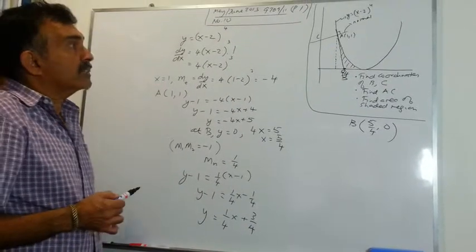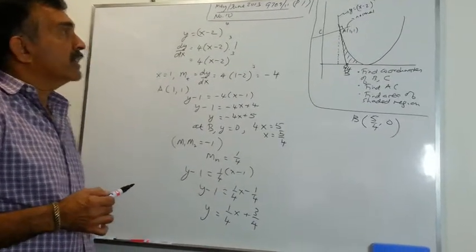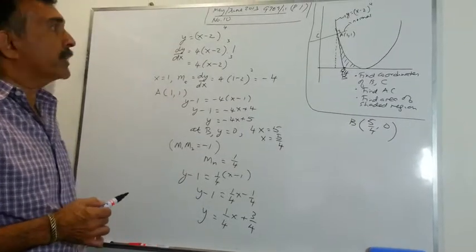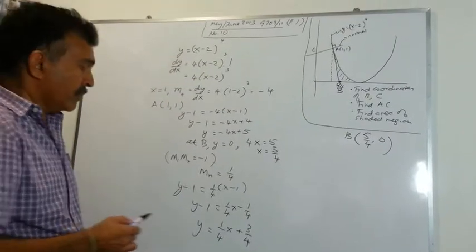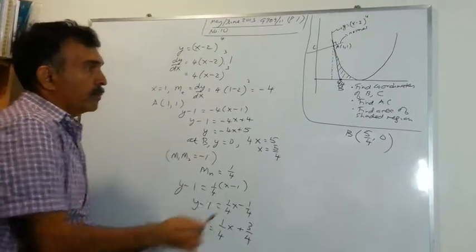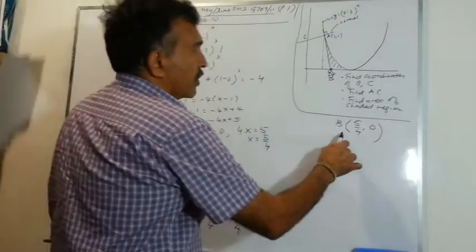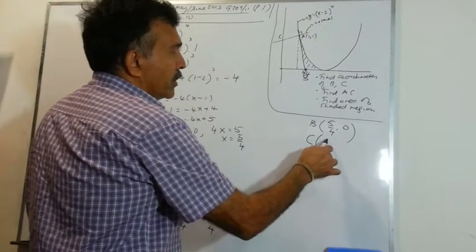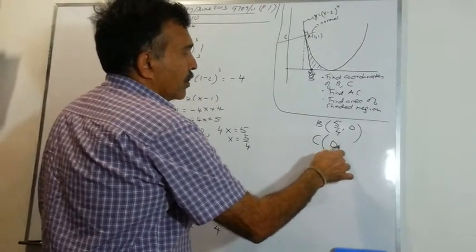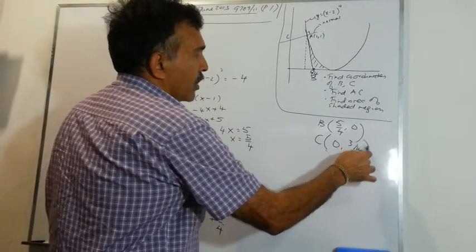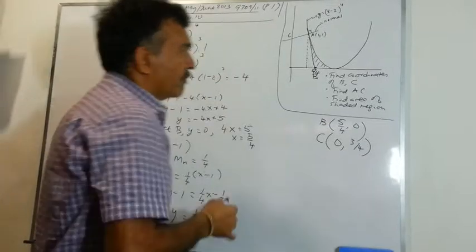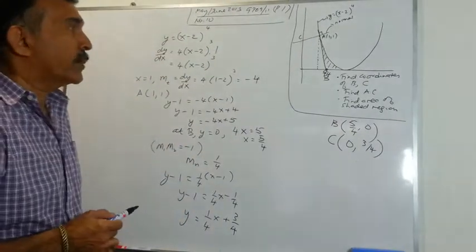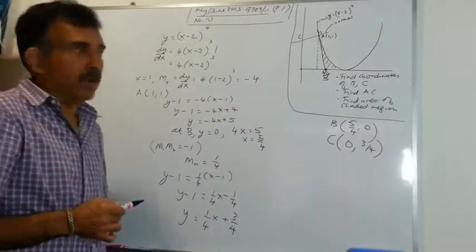The normal cuts the y-axis at C, so on the y-axis x equals 0. Therefore the coordinates of C are (0, 3/4). So we are done with the first part.